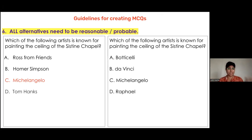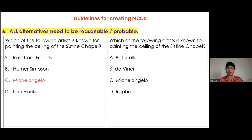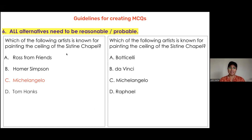If instead the options are Botticelli, Da Vinci, Michelangelo, and Raphael, all these artists are from around the same time period, all Italian, their names are similar in spelling and letter count. A lot of different things have to be considered, and we must make sure that all distractors in an MCQ are probable.